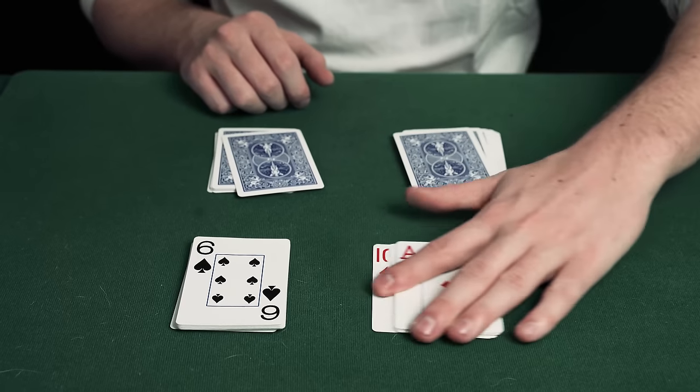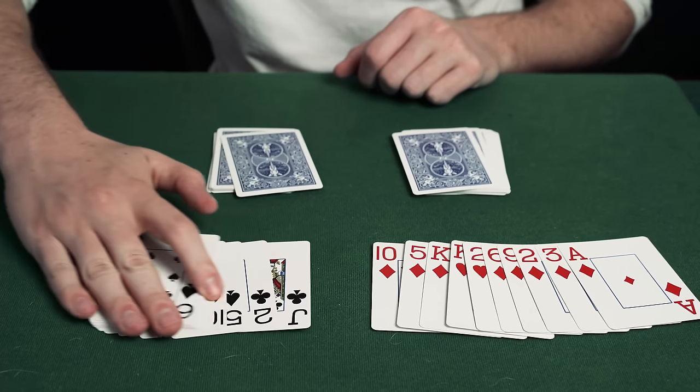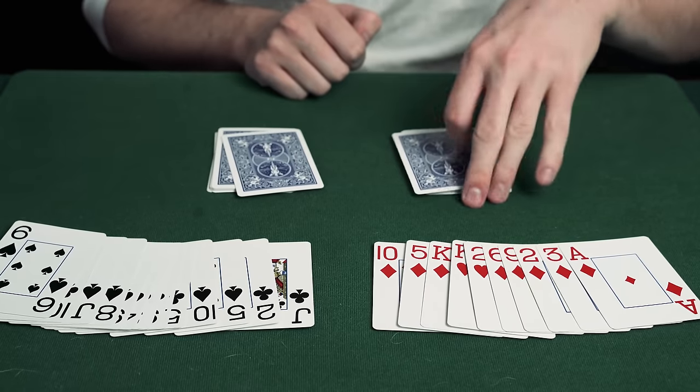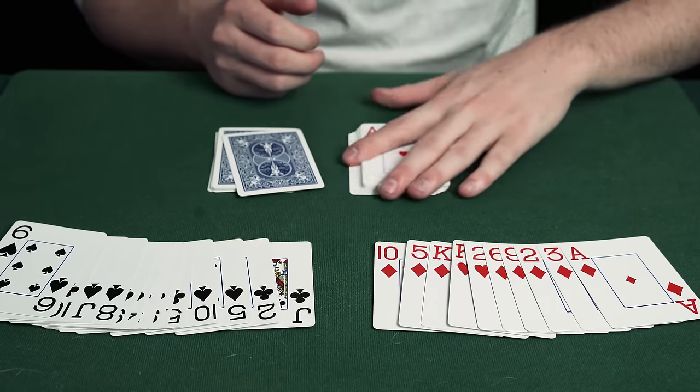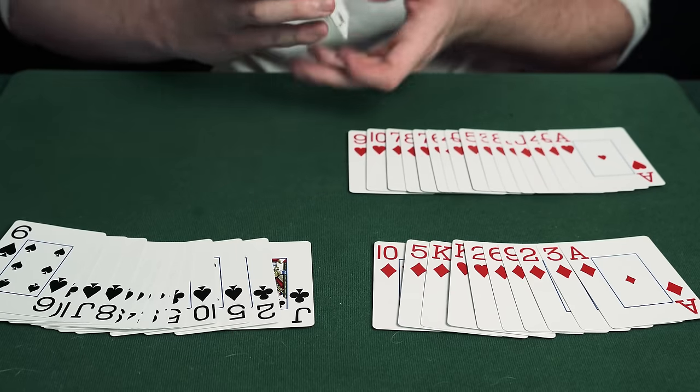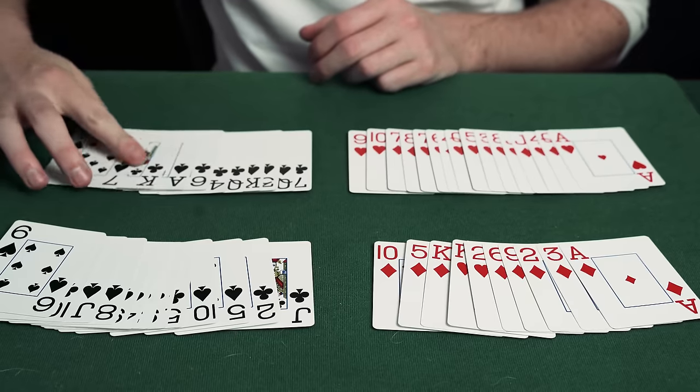Of course all of these cards here are red and all of these cards here are black. But would you believe me if I said that all of these cards are also red and all of these cards are black. The spectator is fooled.